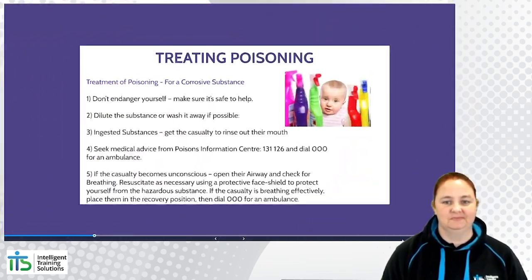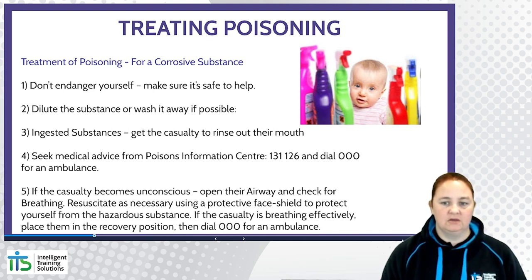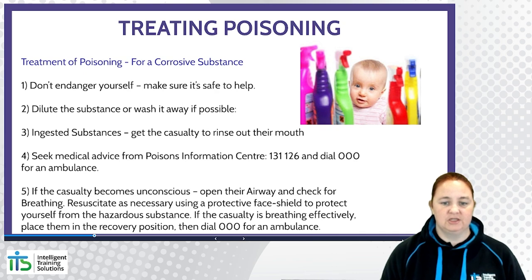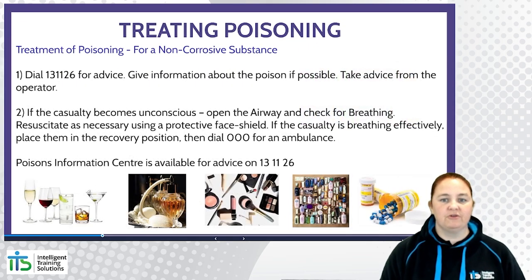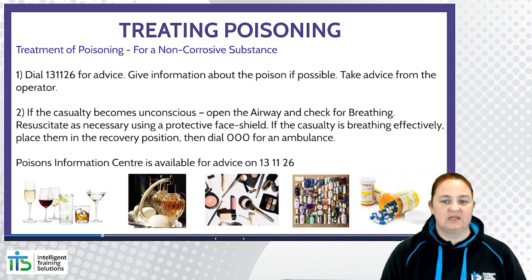Treating poisoning from a corrosive substance: don't endanger yourself — make sure it's safe to help. Dilute the substance or wash it away if possible. For ingested substances, get the casualty to rinse out their mouth but not swallow. Seek medical advice from the Poisons Information Centre on 13 11 26 and dial 000 for an ambulance if needed. If the casualty becomes unconscious, open their airway and check for breathing; resuscitate if necessary using a protective face shield. If the casualty is breathing effectively, place them in the recovery position and dial 000. For non-corrosive substances, dial 13 11 26 for advice — they'll tell you what to do and how dangerous it is. Give information about the poison if possible and take advice from the operator. If the casualty becomes unconscious, open the airway, check breathing, and resuscitate if necessary. If breathing effectively, place in the recovery position and dial 000.